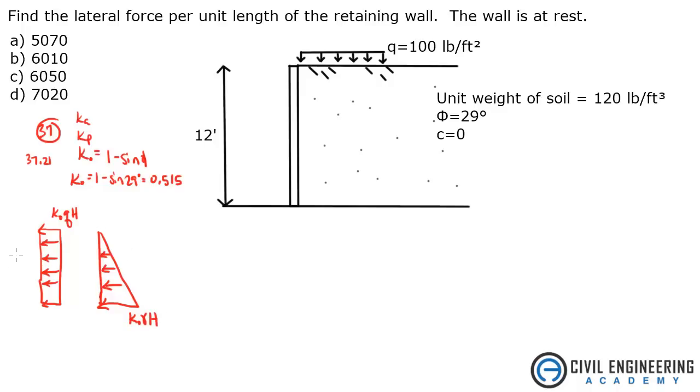So the resultant equals this plus this. What I'm saying is the resultant is the resultant force of this guy, which we'll call Pq, and that's acting midway between there, so that would be 6 feet, plus you have a resultant coming from this triangular load, and we're going to call that P gamma.